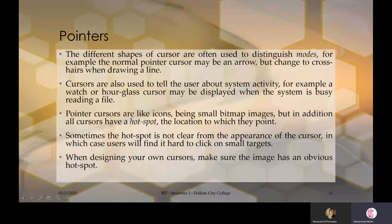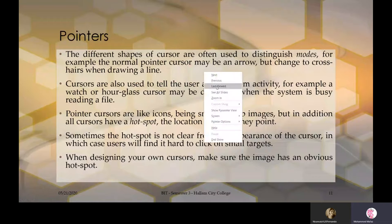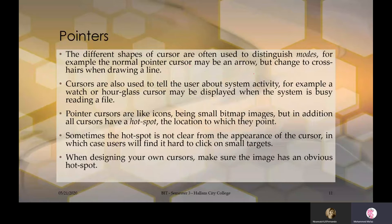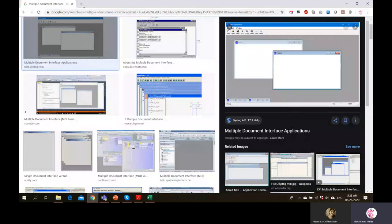When using pointers, different shapes of cursor are used to distinguish modes. For example, the normal pointer cursor may be an arrow, but changes to crosshairs when drawing a line. Even when using a laser pointer in a presentation, removing it changes back to an arrow. The cursor can be changed to anything needed — a crosshair is useful when drawing a line so you know exactly where your mouse is pointing.